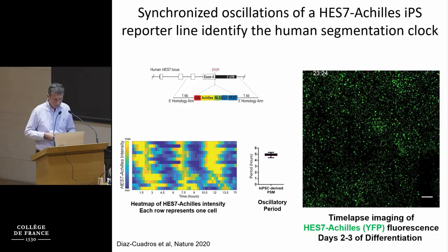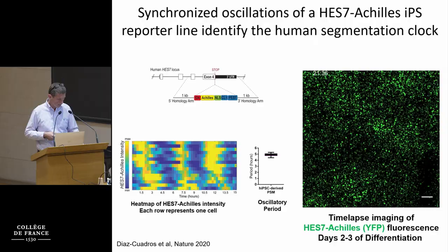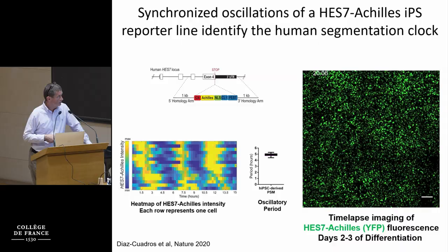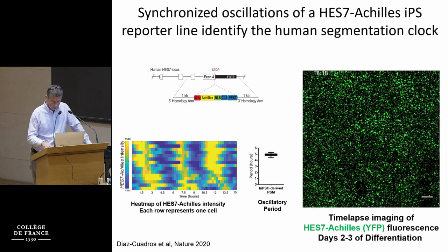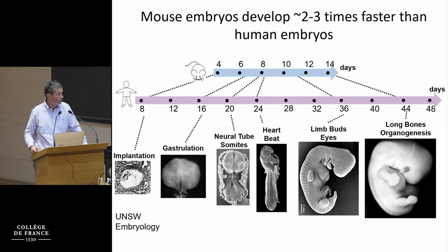From this data you can extract the period of the human segmentation clock, which is about five hours — about two and a half to three times the period of mouse. This work, and also work from the group of Chanta Saleh in Kyoto, Miki, and from Jimmy Thompson in Wisconsin, identified for the first time the human segmentation clock and characterized this period. We then started to think that we could use this system to study the control of the period of somatogenesis, using this as a proxy for developmental timing.